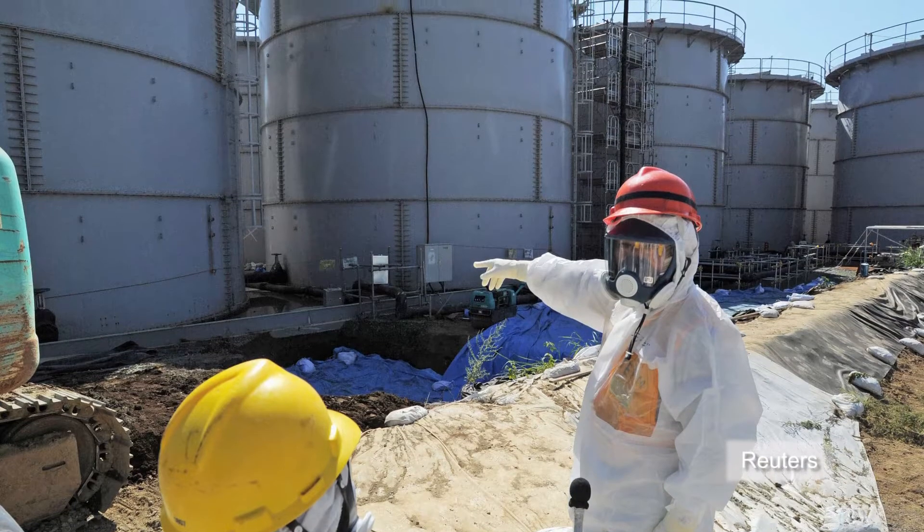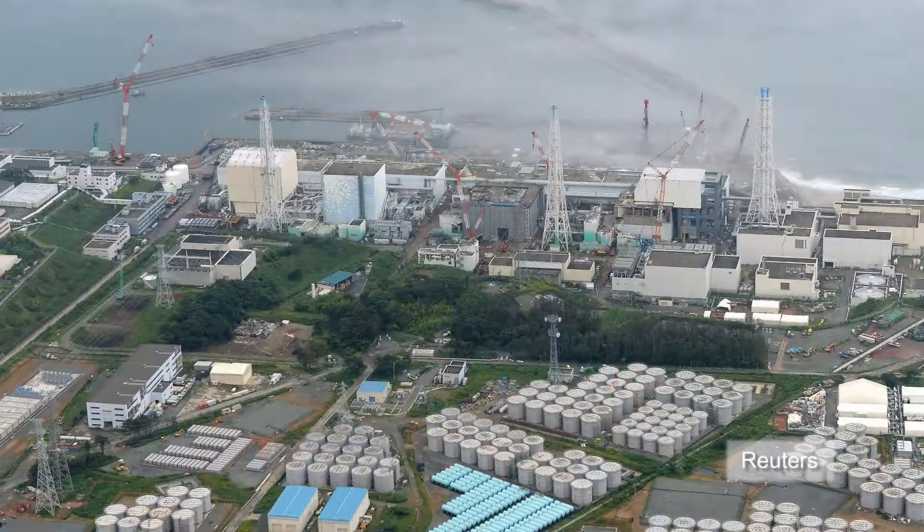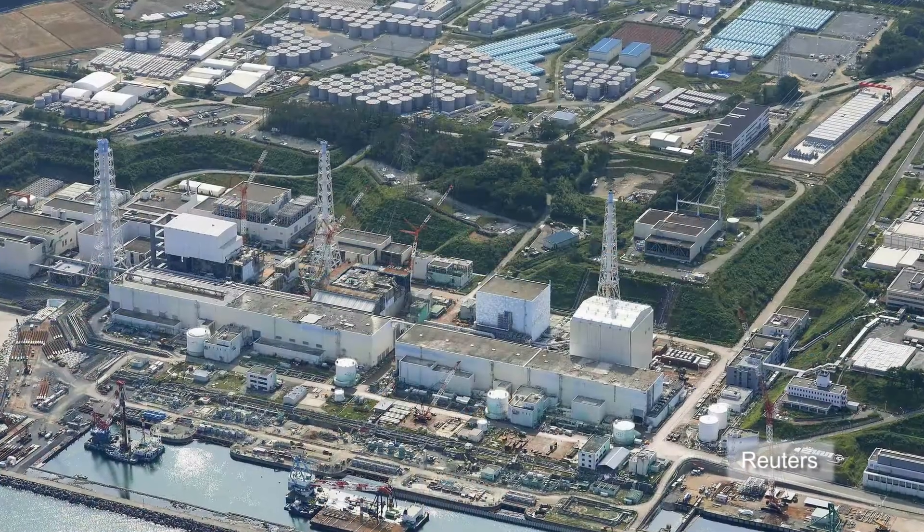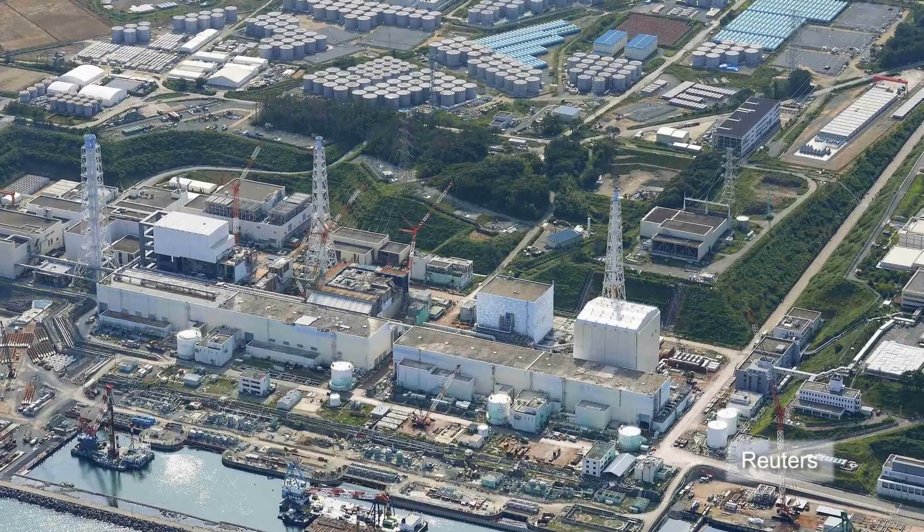The Japanese government is planning to build a costly ice wall around the stricken Fukushima nuclear power plant in a bid to stop leaking radioactive water from contaminating groundwater.